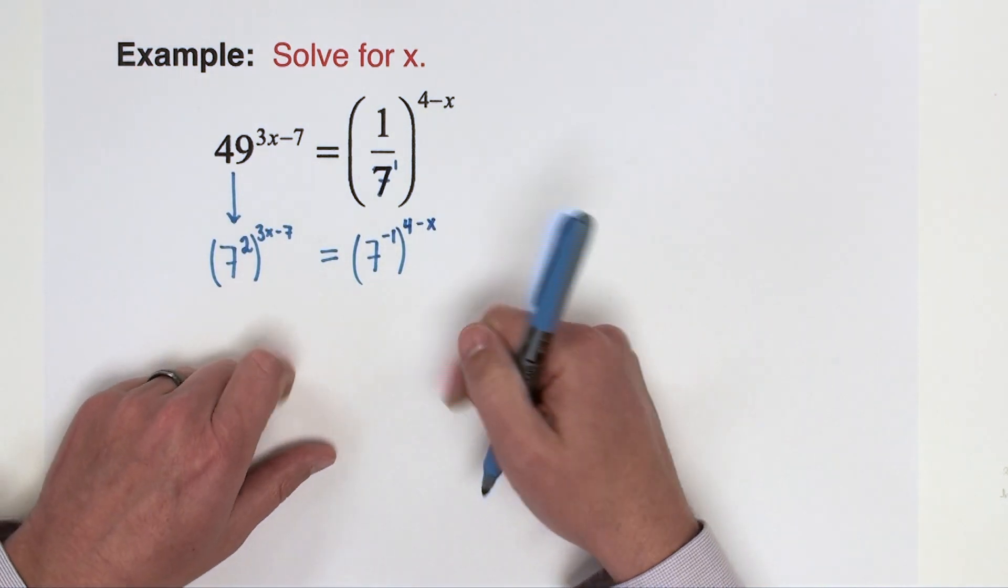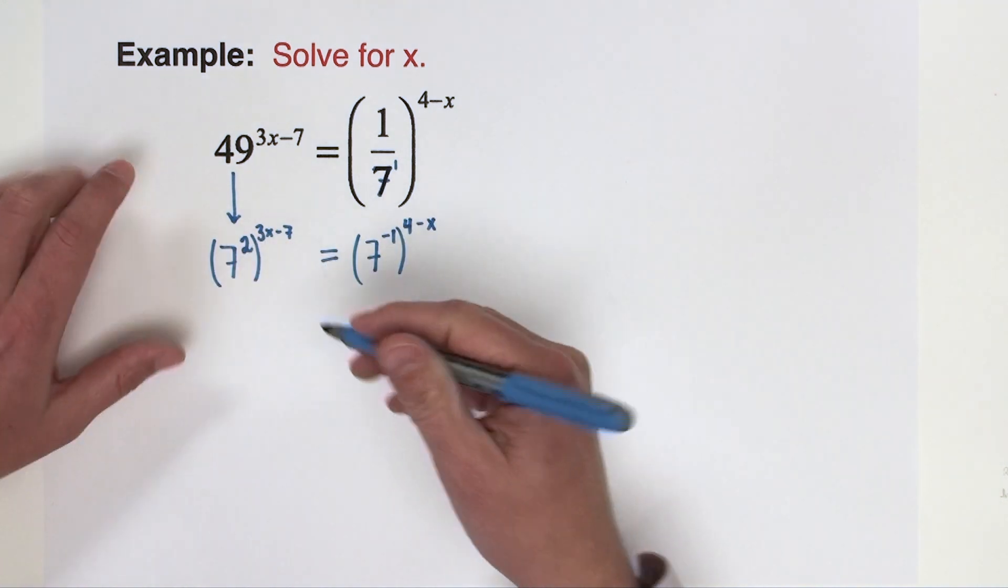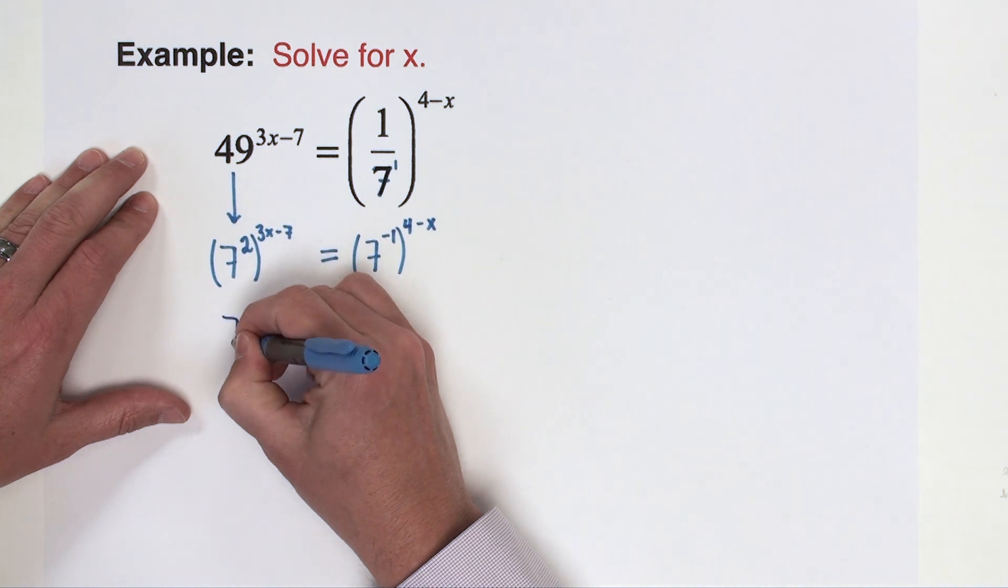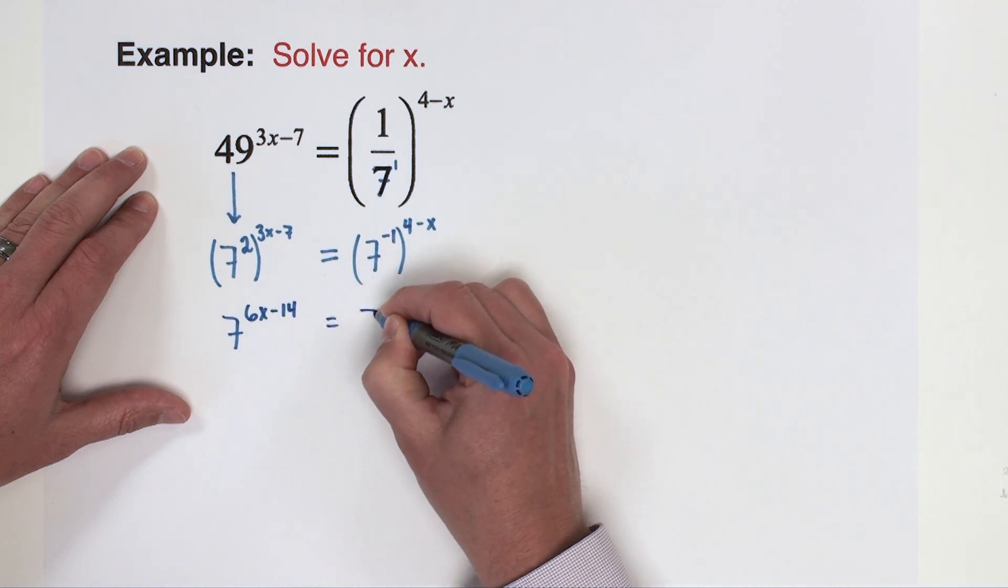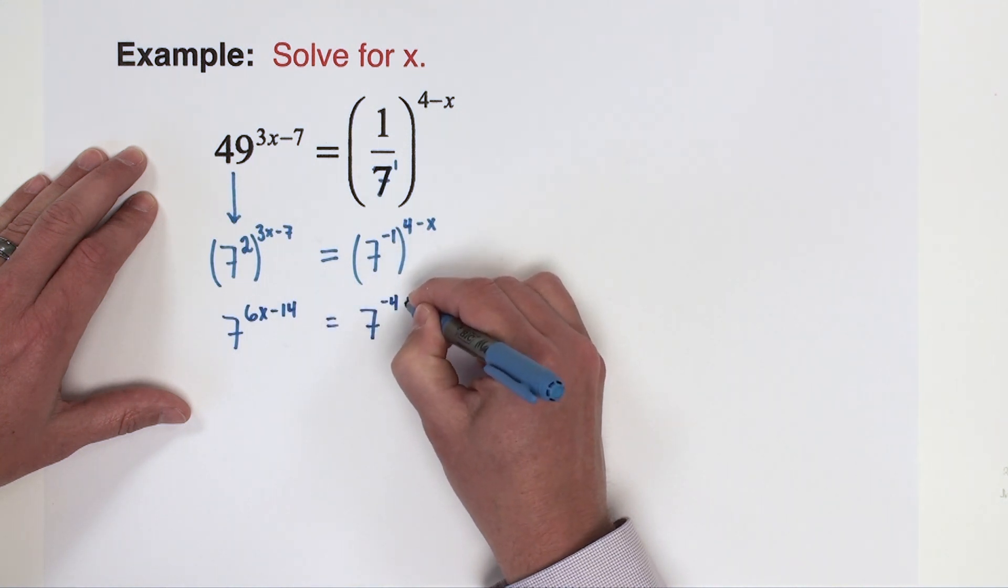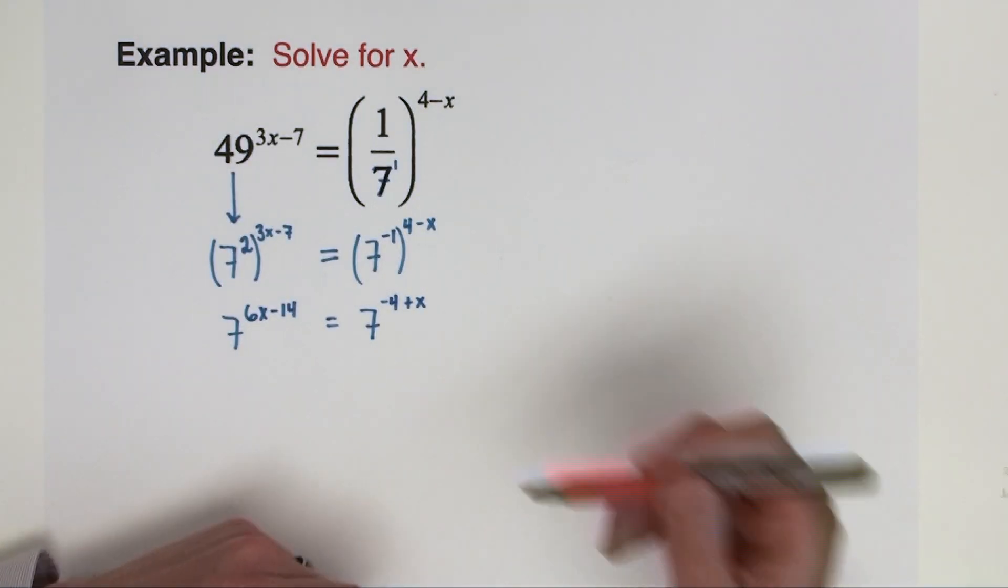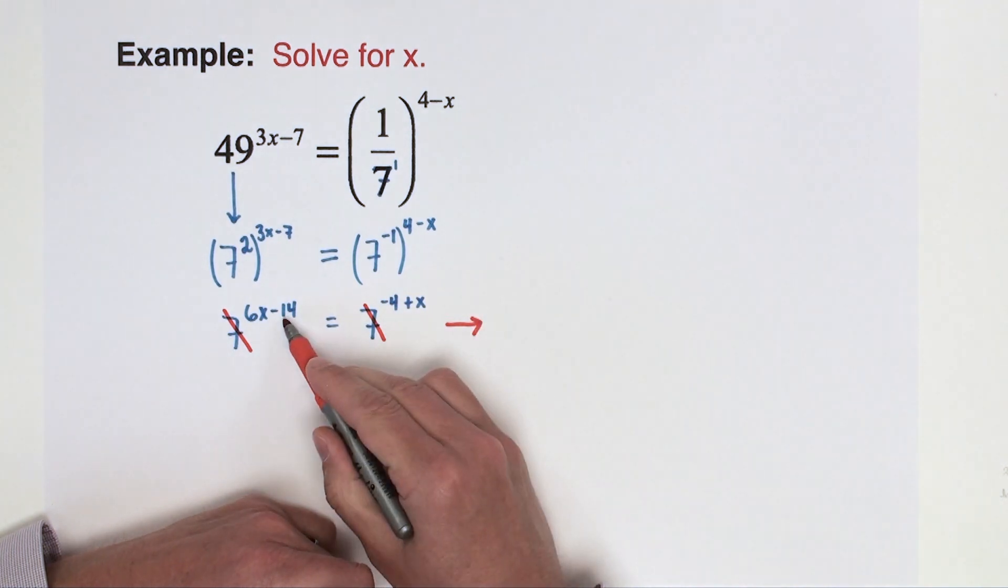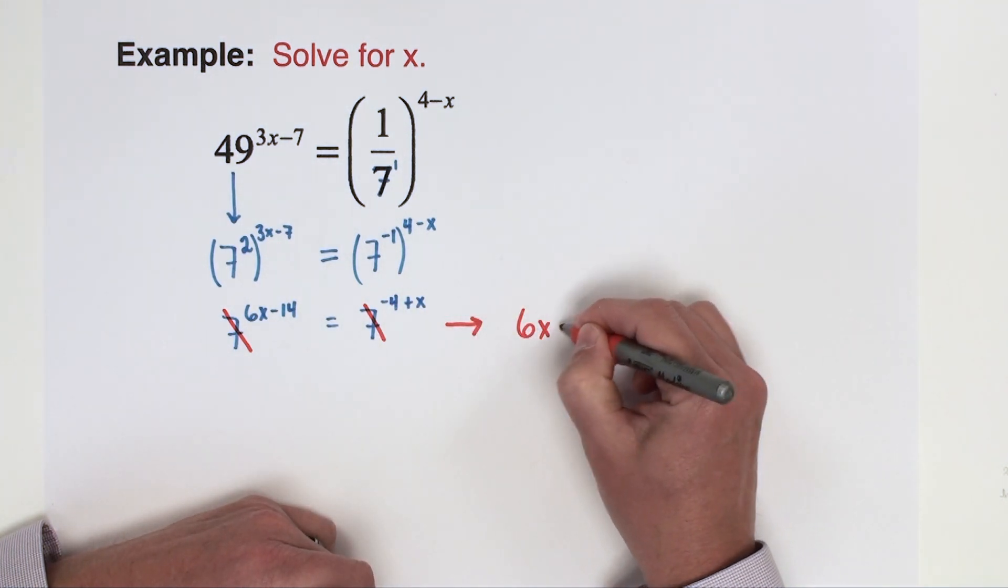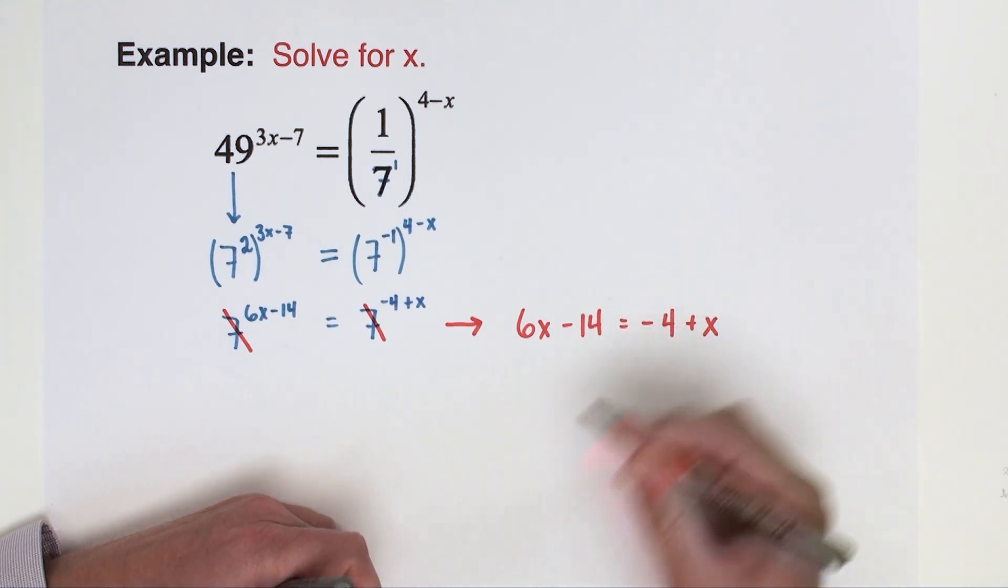All right, now we're ready to go. Just like the last problem, we're going to go ahead and combine the exponents by multiplication, so distribute the powers into those binomials. So we're going to have 7 raised to the 6x minus 14 equals 7 raised to the negative 4 plus x. Now, as we've seen before in the other problems, we are going to remove this common base and re-express this equation as the exponents equal to each other, so 6x minus 14 equals negative 4 plus x.